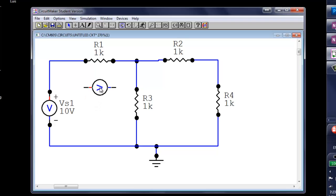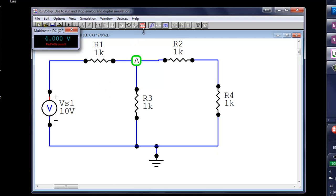That way, all left to right currents, and all top to bottom currents, are reported as positive currents by Circuit Maker. OK. Let's read currents.